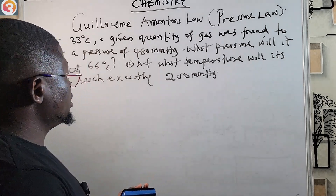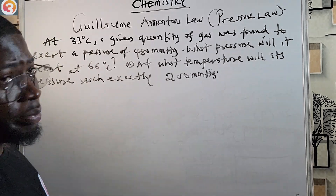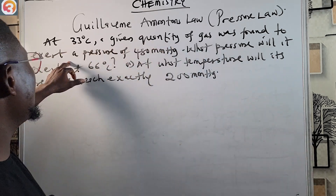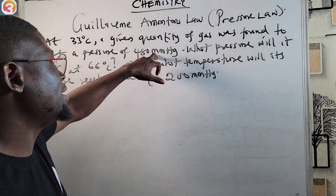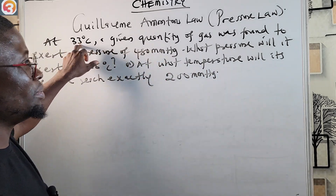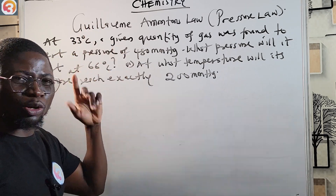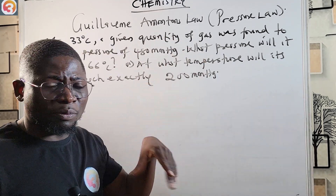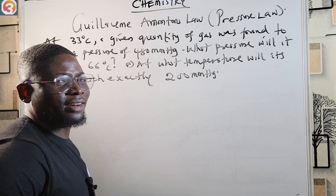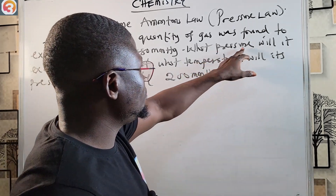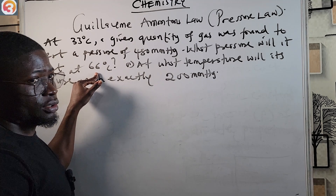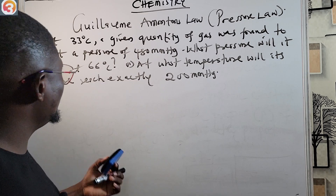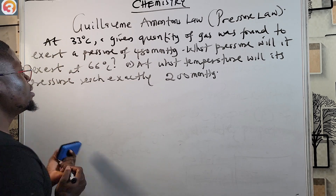Welcome back. Based on the Pressure Law, the question says: at 33 degrees Celsius, a given quantity of gas was found to exert a pressure of 480 millimetres of mercury. When you see pressure and temperature, your mind should go straight to the Pressure Law — use the formula P1/T1 = P2/T2. Part one: what pressure will it exert at 66 degrees Celsius? Part two: at what temperature will the pressure reach exactly 200 millimetres of mercury?